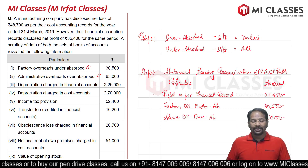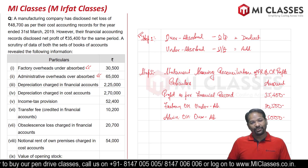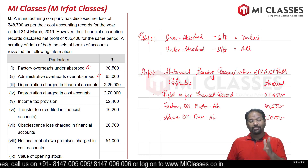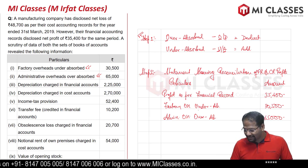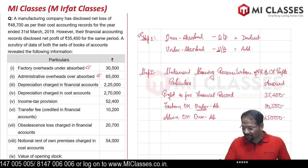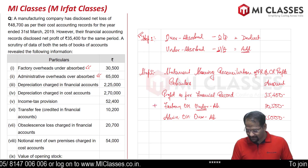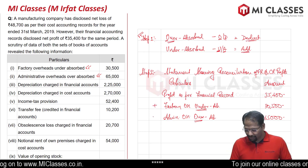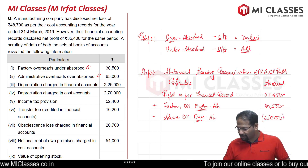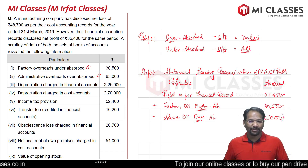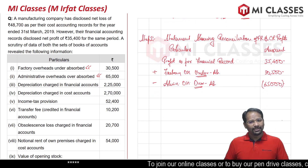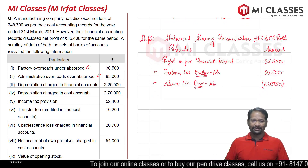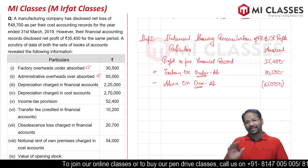Now applying step one: factory overheads is under absorbed — under absorbed means we add, so plus 30,500. Administrative overheads is over absorbed — over absorbed means we deduct, so it goes in brackets as a negative 65,000. The first part covering under absorbed and over absorbed is done.